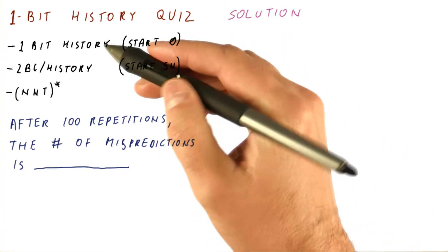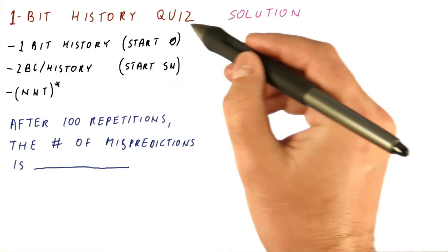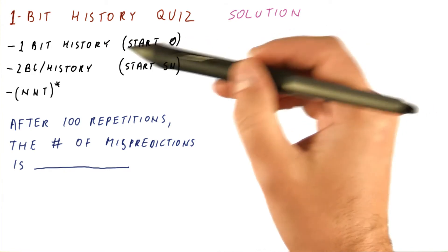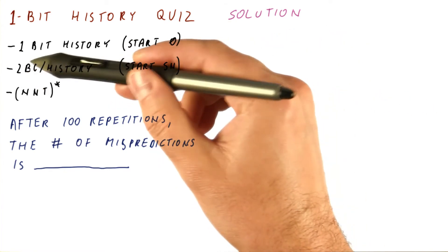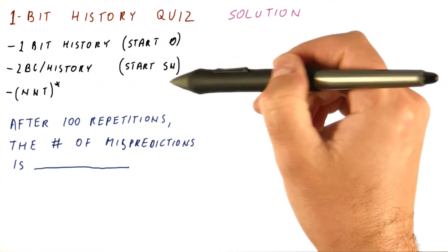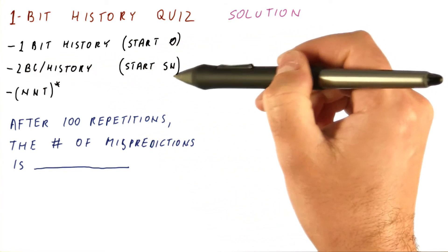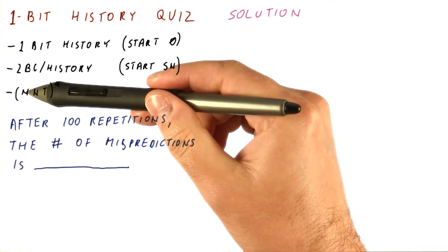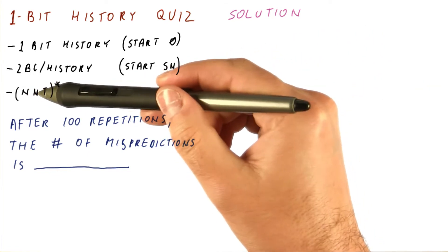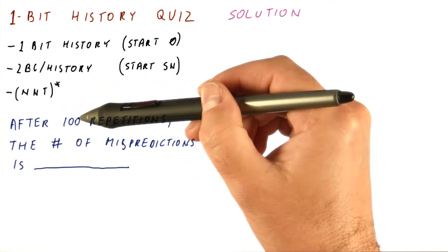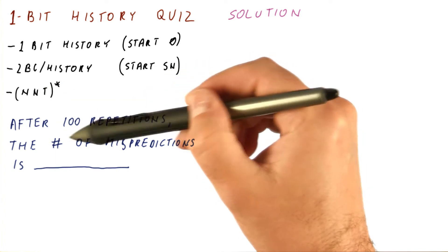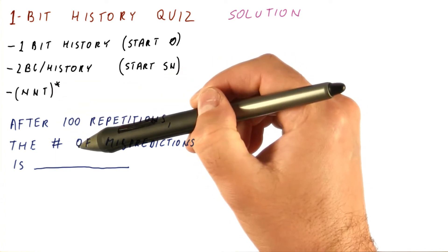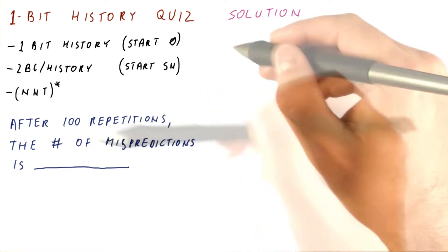Let's look at the solution for our one bit history quiz. We have a one bit history that starts at zero and a two bit counter for each possible history. All counters start at strong not taken. The pattern we're trying to predict is not taken, not taken, taken, repeating. After 100 repetitions of this pattern, what is the total number of mispredictions that we will have seen?